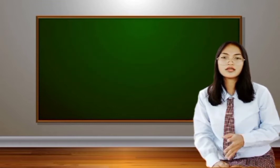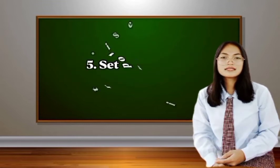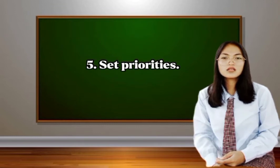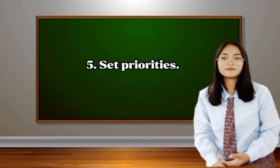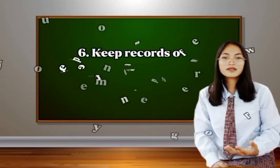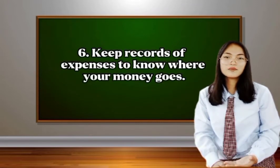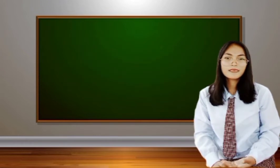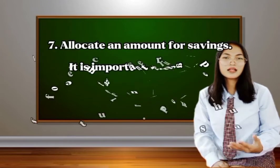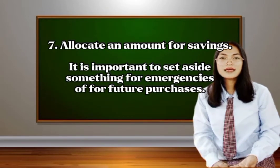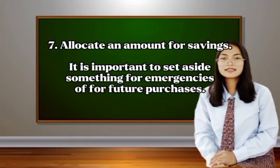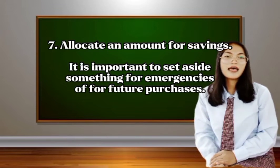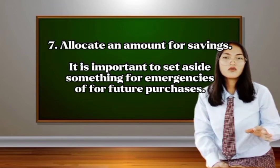Number five: set priorities — determine which items should be given priority. Number six: keep records of expenses to know where your money goes. Number seven: allocate an amount for saving. It is important to set aside something for emergencies and future purchases.